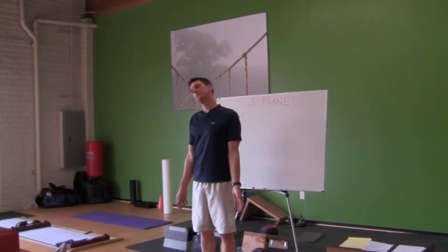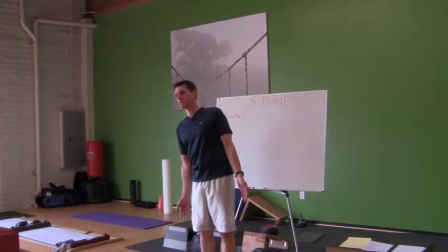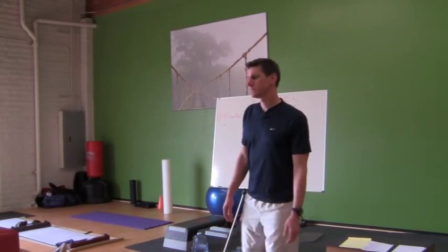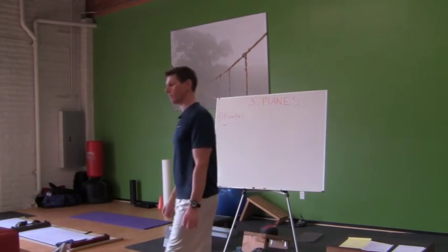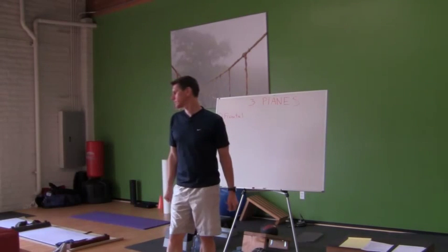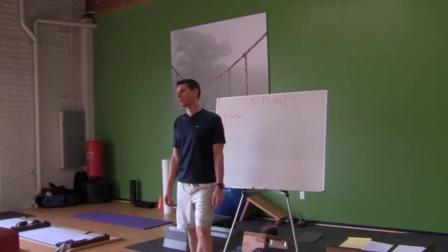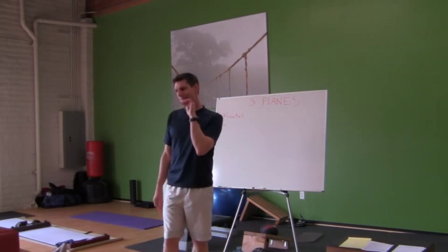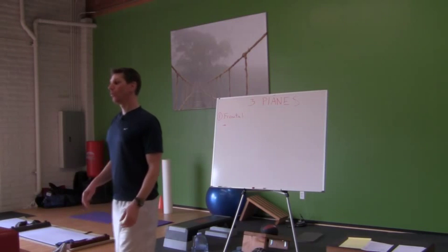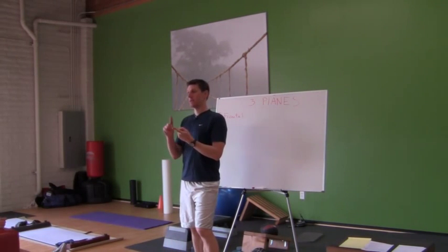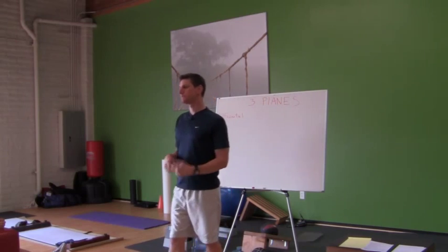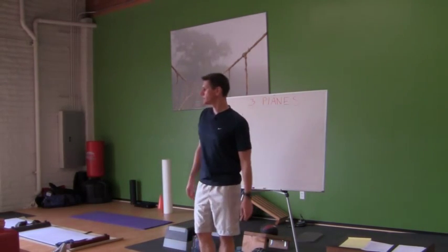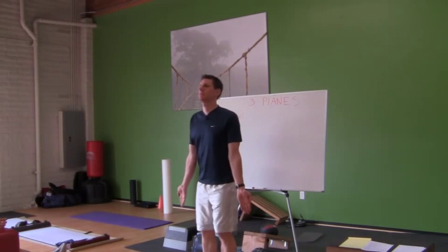How many movements are there total? It's supposed to be seven. Counting so far: abduction and adduction at the shoulder and hip — that counts as separate ones — and right and left lateral flexion. There's another one as well. Looking at the wrist — radial deviation.